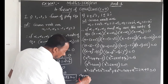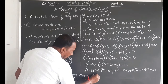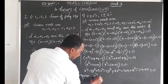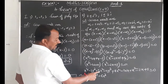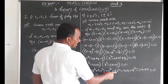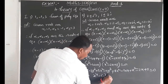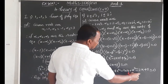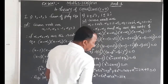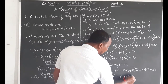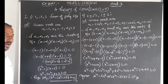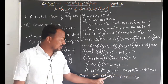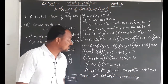Collecting like terms: x⁴, then -2x³ - 4x³ = -6x³, then 5x² + 8x² + x² = 14x², then -20x - 2x = -22x, and constant +5. The required 4th degree polynomial is x⁴ - 6x³ + 14x² - 22x + 5 = 0.